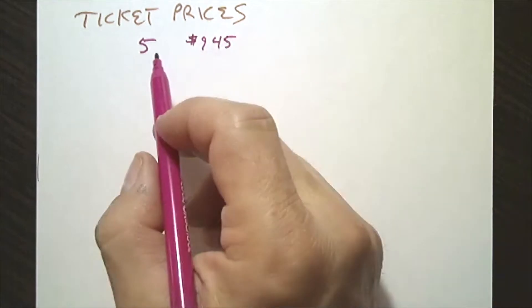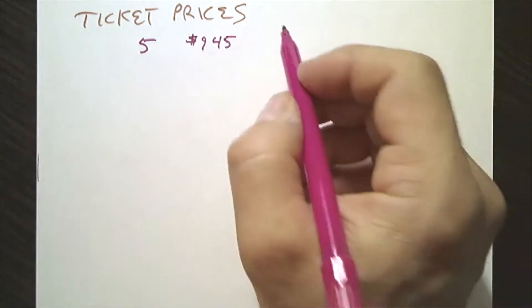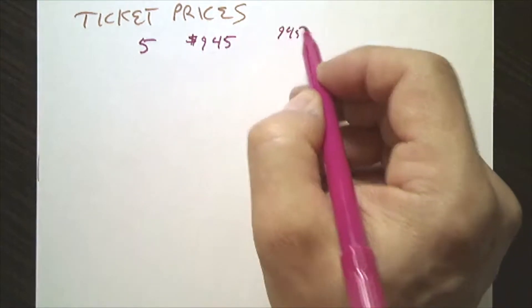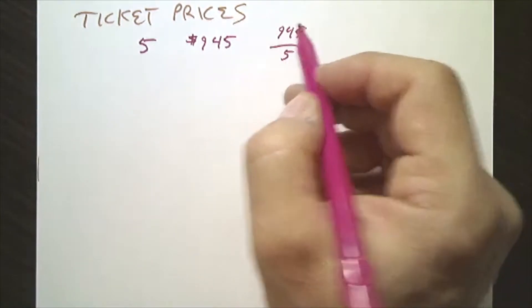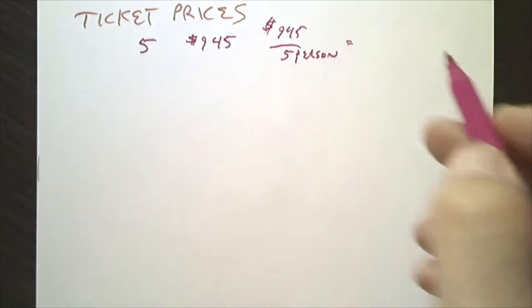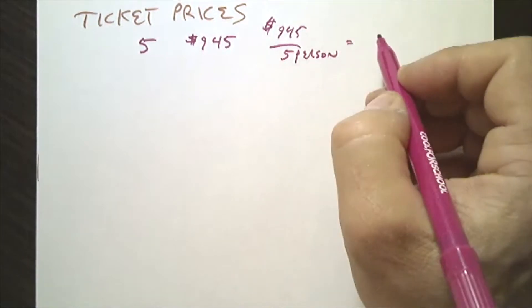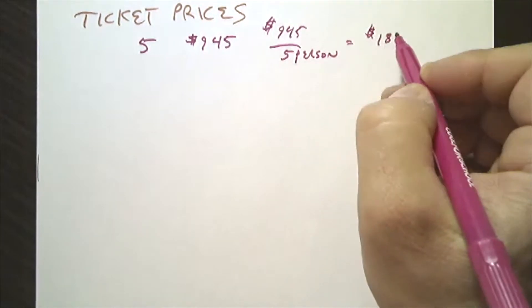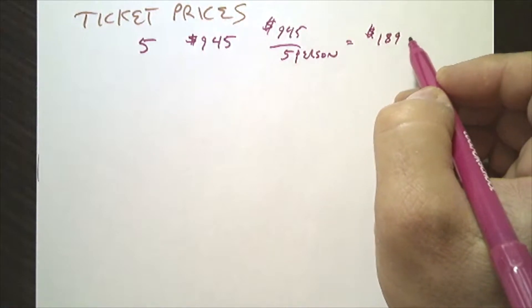So how much is that per person? You have $945, so $945 divided by 5, so that's dollars per person. Dollars per person would give you $189 per person.